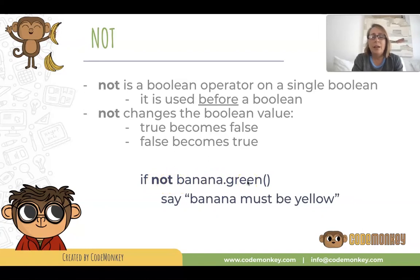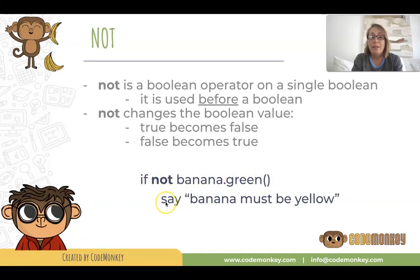On the other hand, if banana green was false, the NOT would make the condition true and the indented code would run. In this case, it would say banana must be yellow.